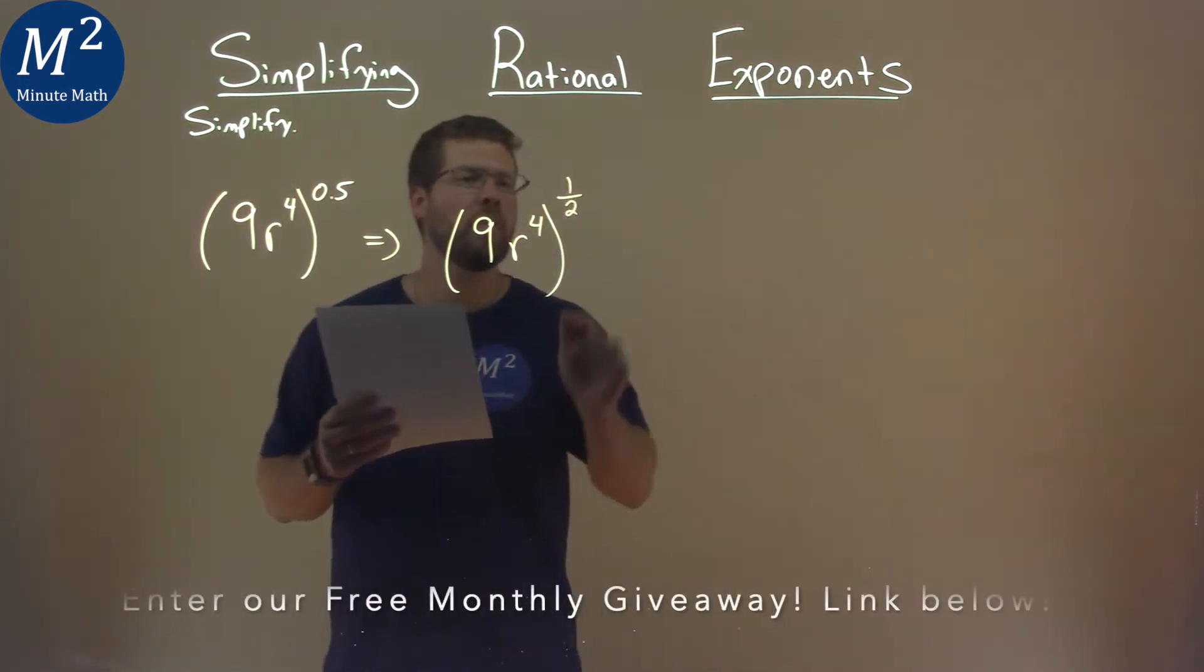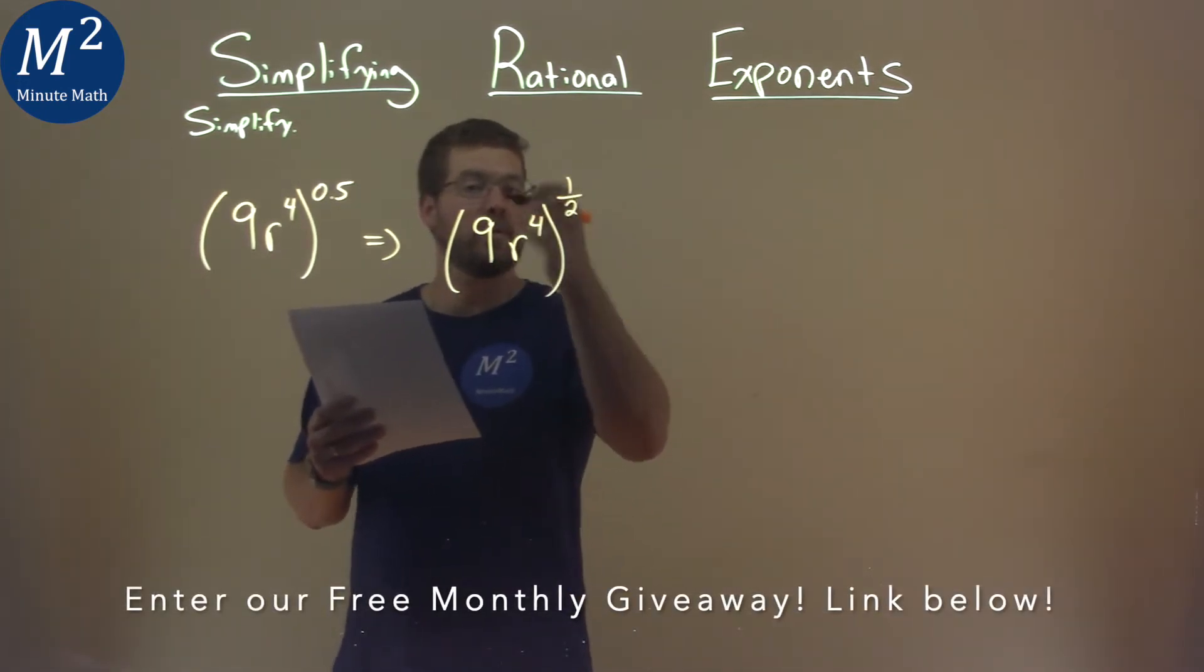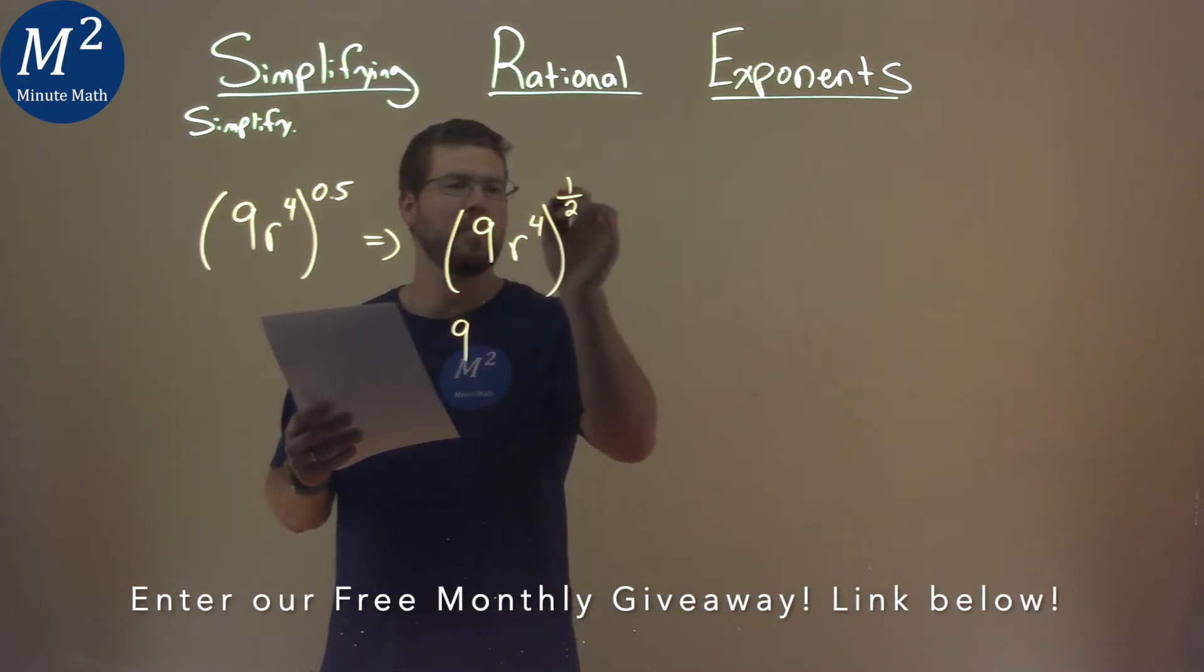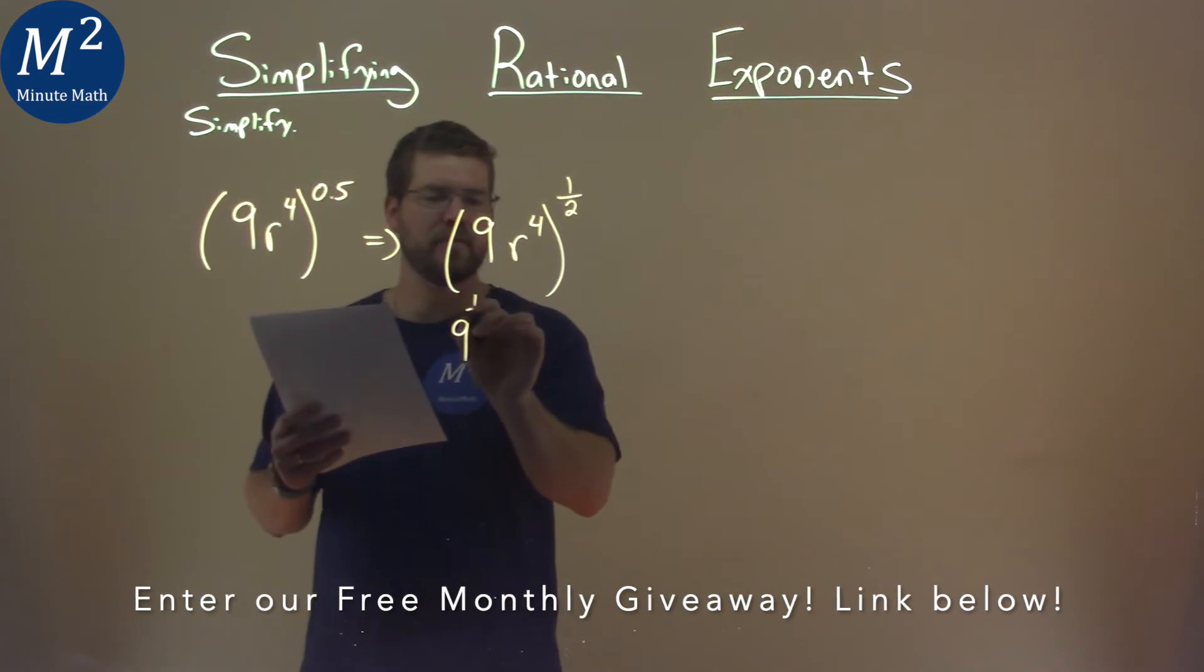So now from here, well, we know we can distribute the one half to both exponents. So 9 here is really when we distribute that, multiply it out, it's just to the one half power.